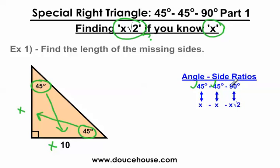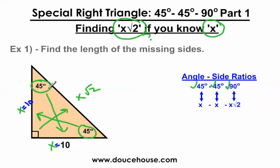The last angle is a 90-degree angle, and I'm going to label the side opposite that angle x square root 2. On this first problem, I actually know what x is — x is equal to 10. Since I know x is 10, I'm going to make this side 10 as well. So this could be 10 inches, 10 feet, 10 miles. The sides opposite the 45-degree angles are always equal to each other. So since x is 10, this x is also 10, and this side becomes 10 square root 2.